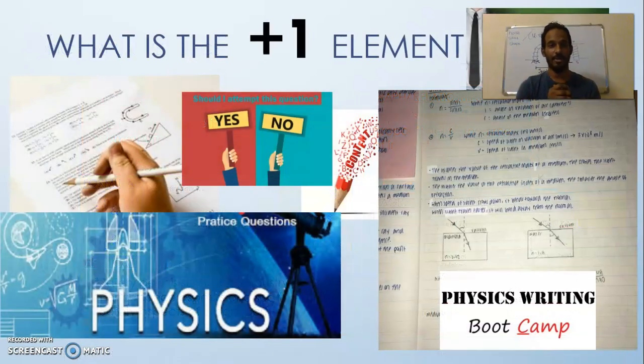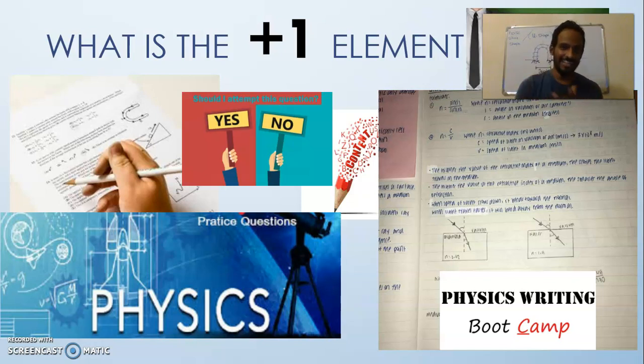That leads me to my last element. What is the last, the plus one element? The last element is: write. There is no other way. Attempt the question, write the essay, write the structured answer, get the hang of writing it. Definition-wise, formulas—you will understand that the more you write, the more easier it is for you to express the answer. It removes the fear of attempting a question. So I hope this video basically helps you in guiding you how to approach physics as a subject.